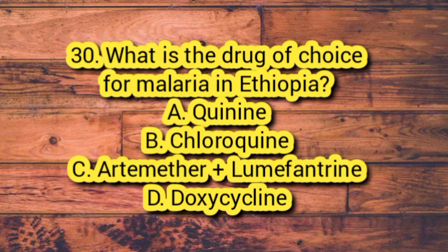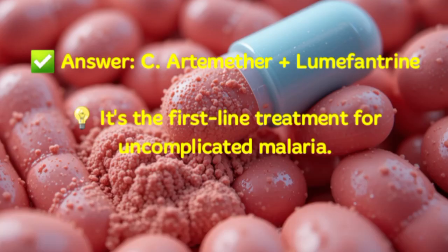Question 30. What is the drug of choice for malaria in Ethiopia? A. Quinine. B. Chloroquine. C. Artemether plus lumefantrine. D. Doxycycline. Answer: C. Artemether plus lumefantrine. It's the first-line treatment for uncomplicated malaria.